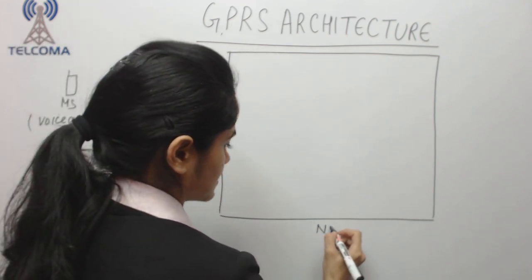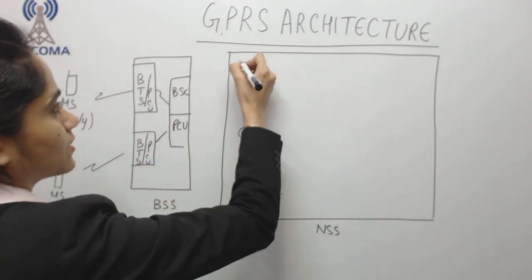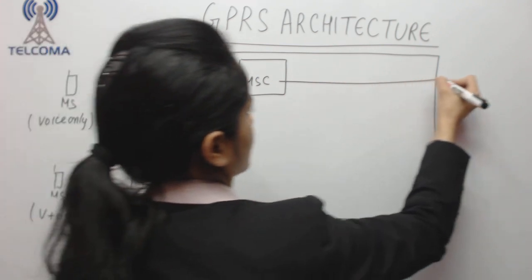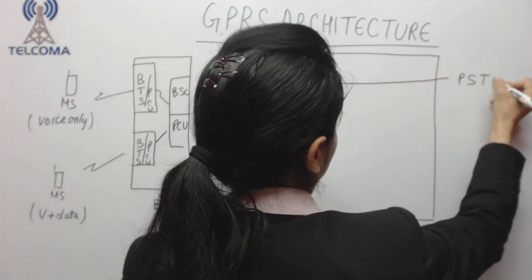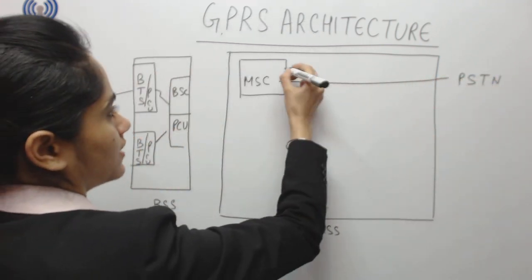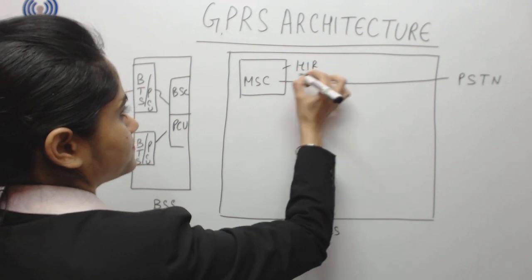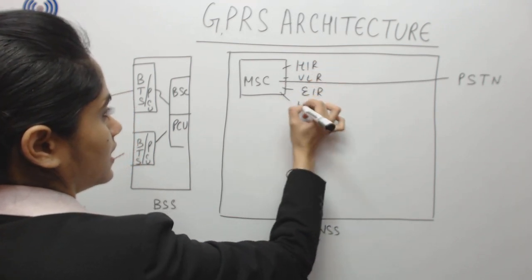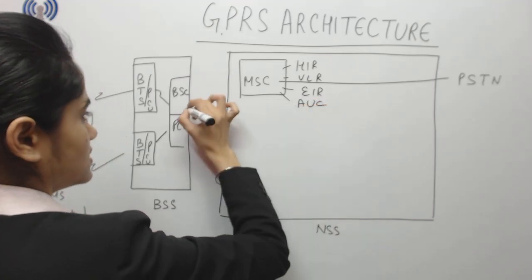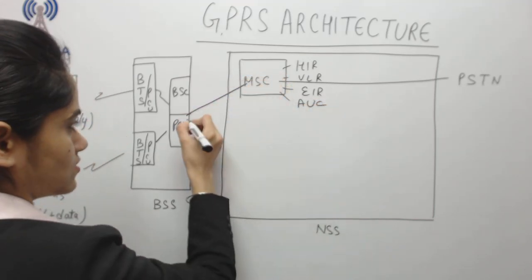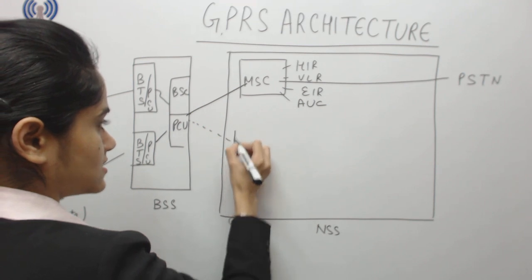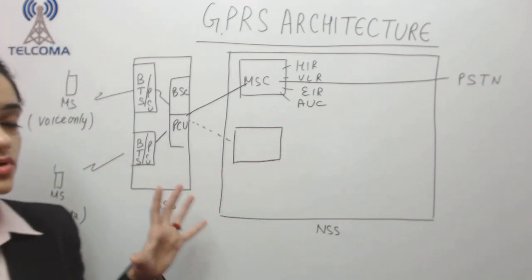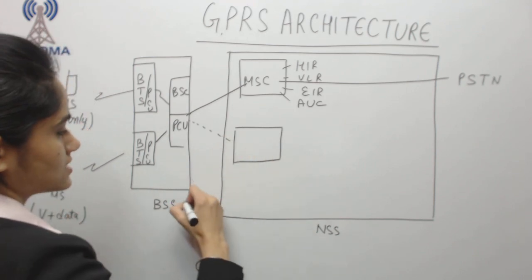Moving to the core network, which we call NSS, we have the MSC. The MSC is attached to the external PSTN network, and we have HLR, VLR, EIR, and AUC as databases. The BSC is also attached to the MSC.